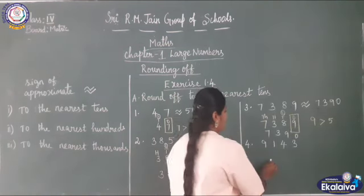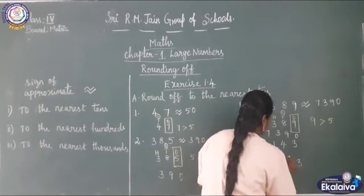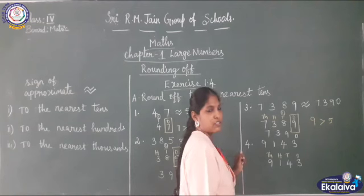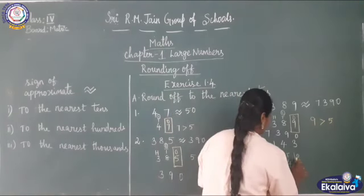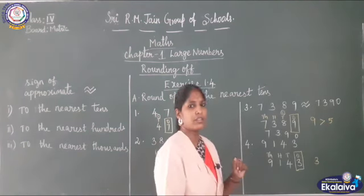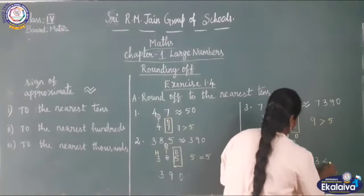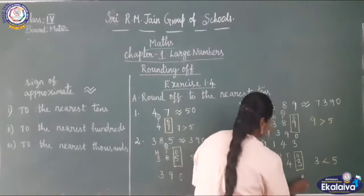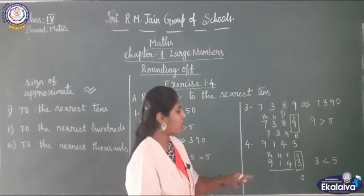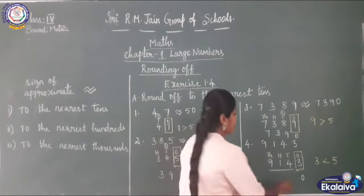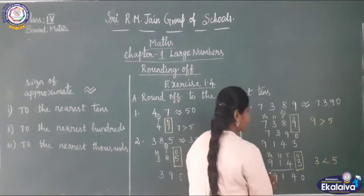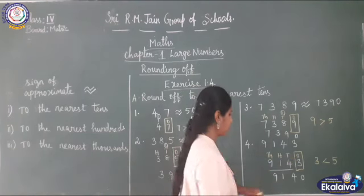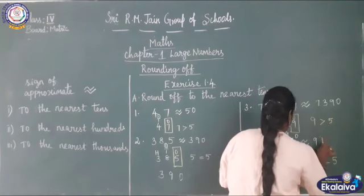Next: 9143. Write the place value — ones, tens, hundreds, thousands. Check the ones place. 3 is less than 5. If it is less than 5, you just put 0 in ones place and write the remaining numbers as they are — no need to add 1 to the tens place. So the approximate value of 9143 is 9140.